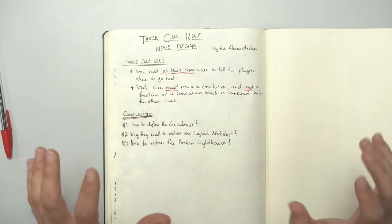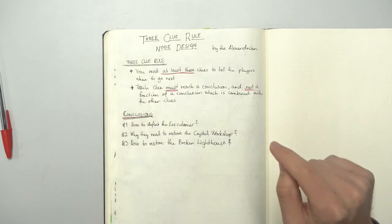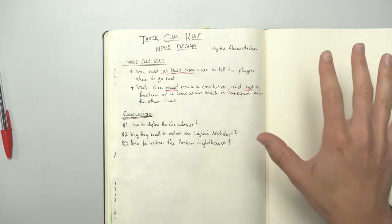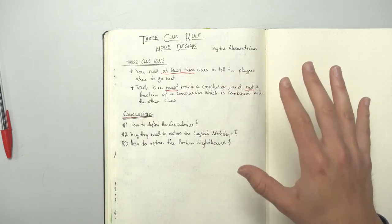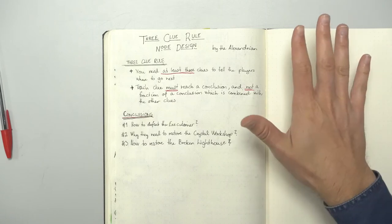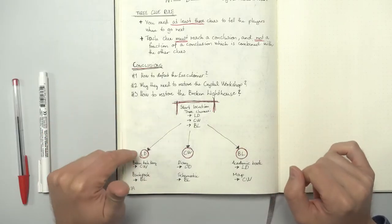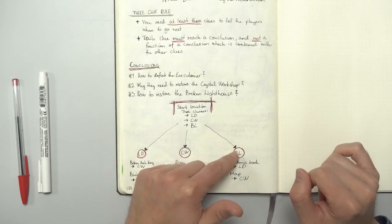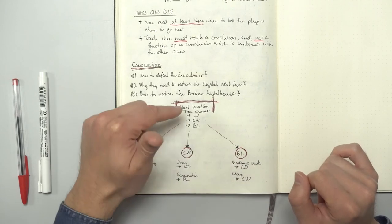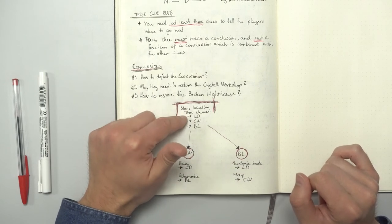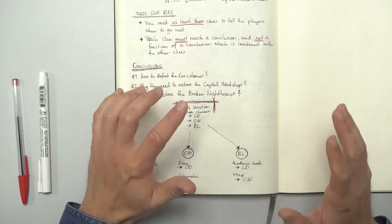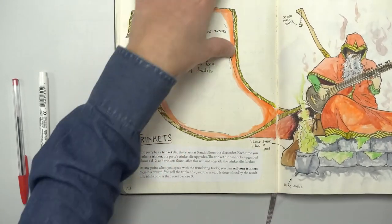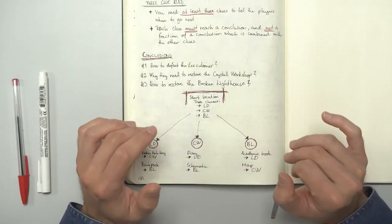Now that we have a total of six clues, you might start to see a pattern. Two clues in each location and each of them point to the other two locations. This is part of the node-based scenario designed by the Alexandrian again. Let me show you. We have three locations. LD, which is the lower dungeons. CW, the crystal workshop. And BL, the broken lighthouse. And we have a start location that has three clues. One to each location. I haven't decided exactly what the start location is, but let's just assume that it's the wandering trader for now.